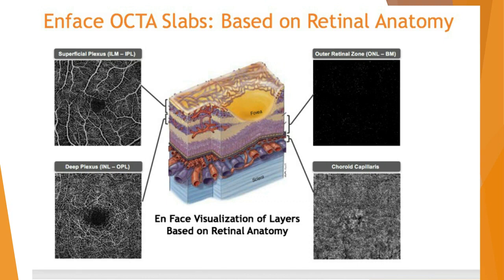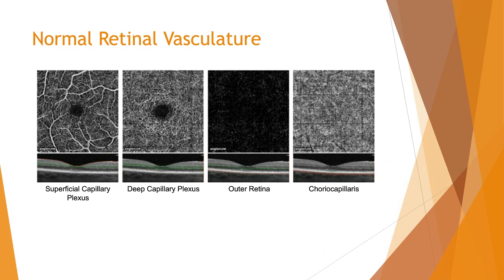The last slab, the choriocapillaris, feeds the most posterior section of the choroid. This slab should be a white, homogenous, spongy layer because the choroid is made up of all blood. You must remember what normal angiography looks like, because if you don't, you won't recognize abnormal. You'll always have your angiography scan alongside a B-scan. The red and green calipers on the B-scan outline the section being fed by each plexus, and as you move further posterior, those calipers move — this helps orient where the vascular supply correlates on the B-scan.